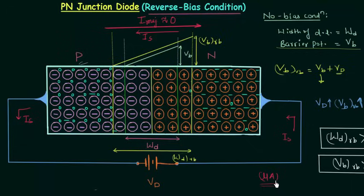The minority charge carriers are very few in number, so the reverse saturation current is very small, in the order of microamperes, and it only depends on temperature. This concludes our discussion of no bias, forward bias, and reverse bias conditions of the PN junction diode. In the next lecture we will see the representation of the PN junction diode and discuss the relation between diode current and diode voltage.